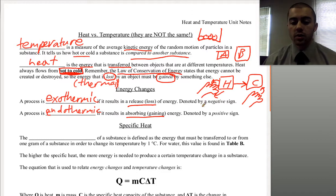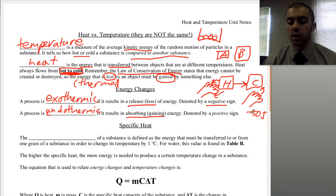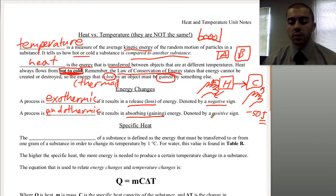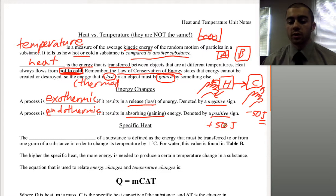With exothermic, we're saying this is a negative change because we're losing energy. So if we have negative 50 joules of heat, that would reflect an exothermic change. Joules is the unit for energy, just like grams is the unit for mass. If we're gaining energy, that would be a positive change — so positive 50 joules means we gained 50 joules of energy, and this would be an endothermic change.